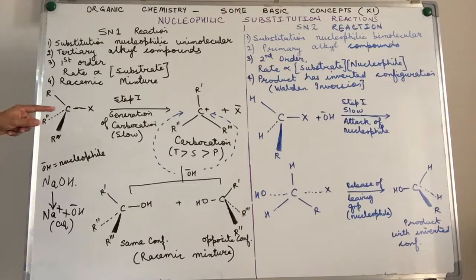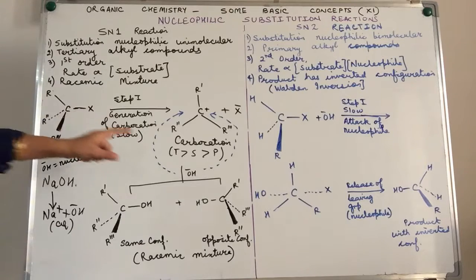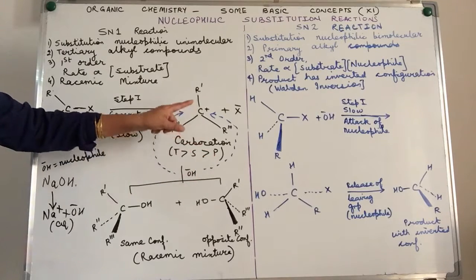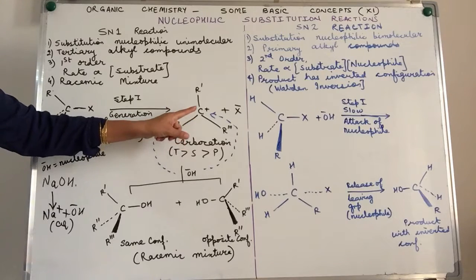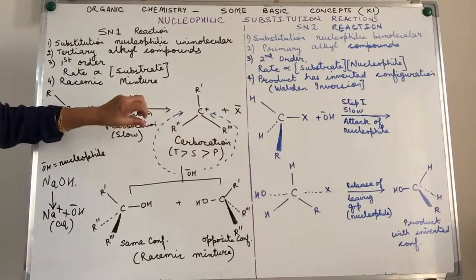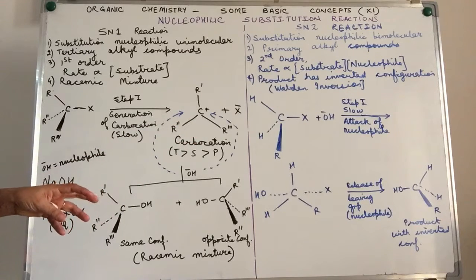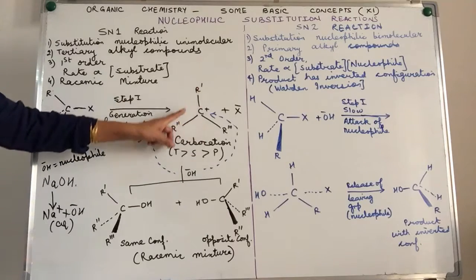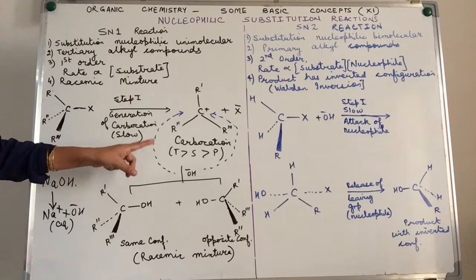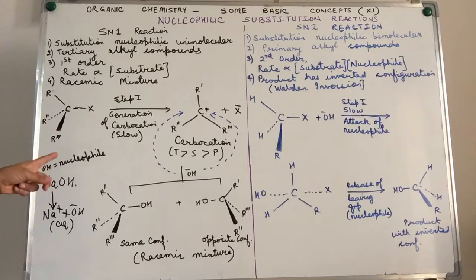What if primary alkyl halides were to undergo this type of reaction mechanism? Tertiary carbocations are most stable, followed by secondary, and primary carbocations are least stable. Primary carbocations will not easily form — they will not allow the halogen atom to leave easily. They are not stabilized by hyperconjugation as tertiary carbocations are. Therefore, primary alkyl halides do not have a tendency to undergo SN1 reaction mechanism.